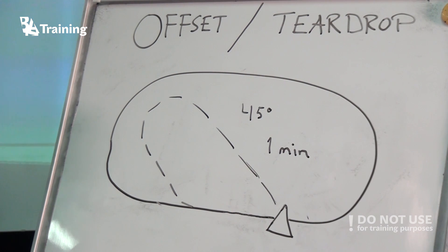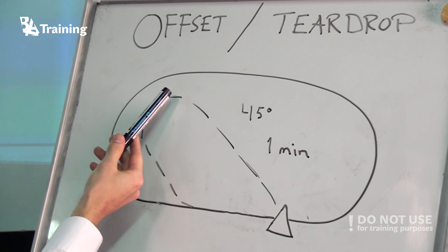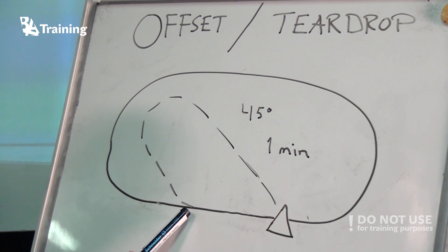If you have decided that offset or teardrop is the entry to use, you will come from this direction, you will proceed to the fix and then you should turn 45 degrees from the outbound leg, proceed for one minute, then start the turn and intercept the inbound leg. And then you can continue with the rest of the holding.